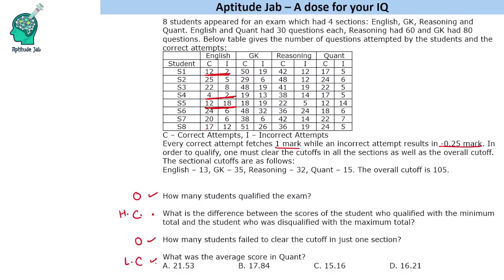One student has 14, so that one cleared the English cutoff. Those who failed English will not qualify anyway. Moving to GK, the cutoff is 35. Checking the table: this one is not clearing the cutoff, this one is not clearing the cutoff. One has 6.25 above the threshold so that one clears. Those failing GK will not qualify.